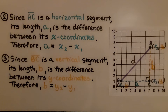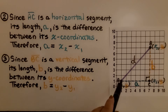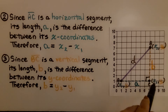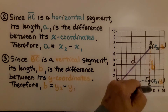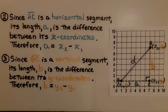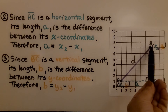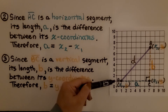The second step: since segment AC is a horizontal segment, its length a is the difference between its x coordinates — the difference between 7 and 1. Therefore, a equals x sub 2 minus x sub 1. And since segment BC is a vertical segment, its length b is the difference between its y coordinates. Therefore, b equals y sub 2 minus y sub 1, which is 7 for y minus 1 for y.